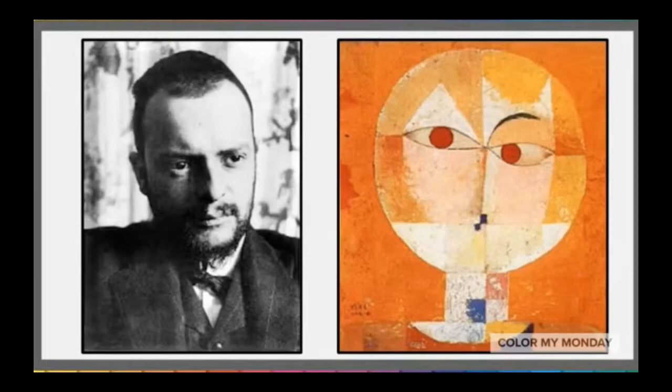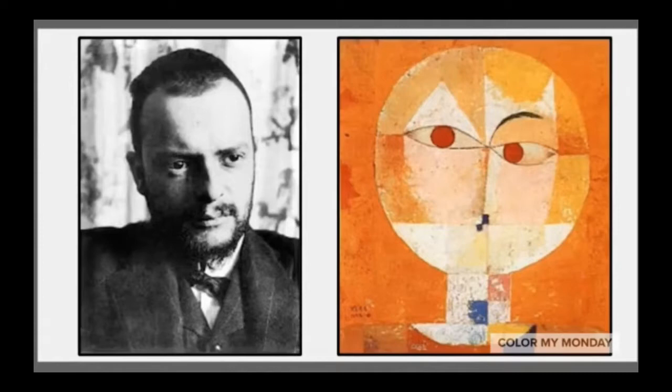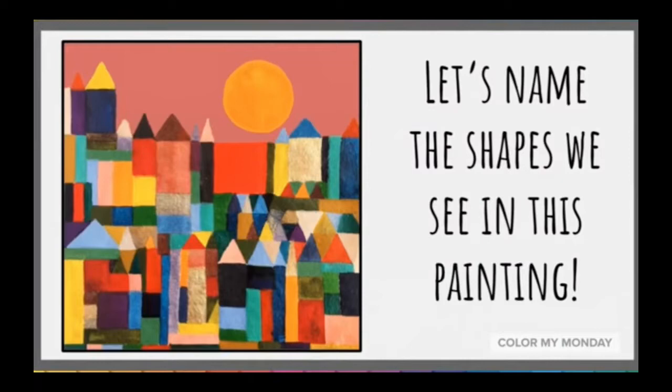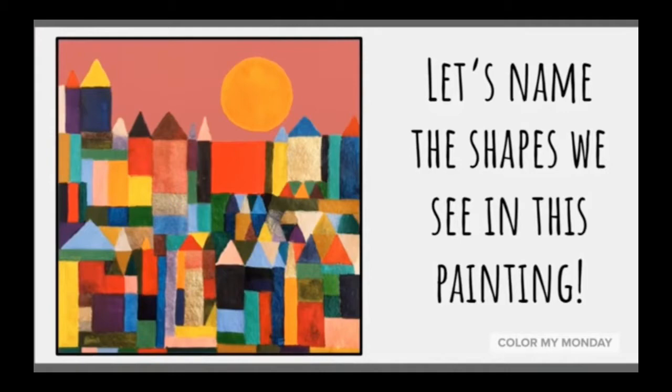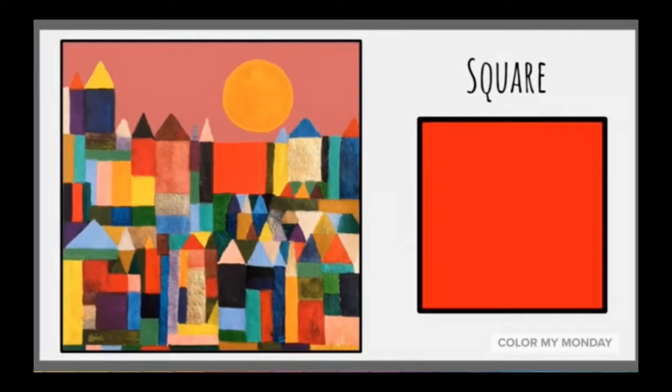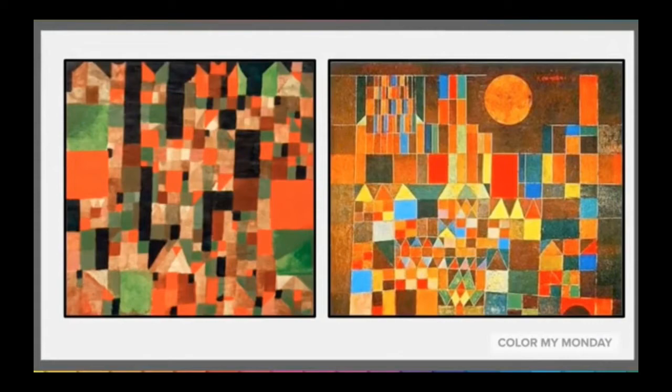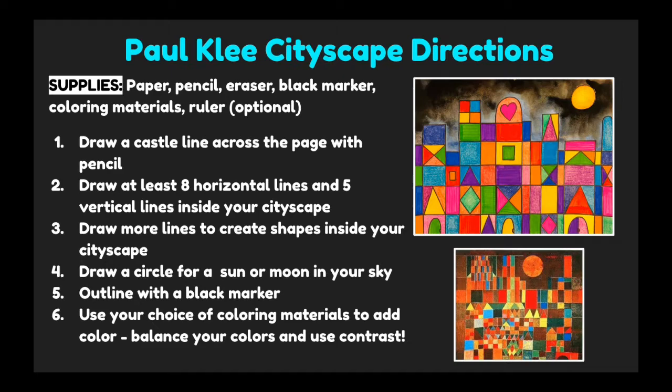His paintings are mostly influenced by the art movements of cubism, expressionism, and surrealism. Cubism is an art style that uses basic shapes to make up a picture. Notice how Paul Klee used basic shapes to make up his self-portrait. This is a cityscape painting by Paul Klee — let's name the shapes we recognize in this painting, like a circle, a square, a triangle, a rectangle. Here are more cityscape and castle paintings by Paul Klee.